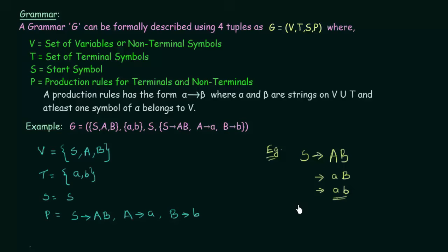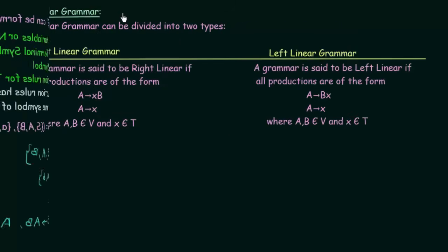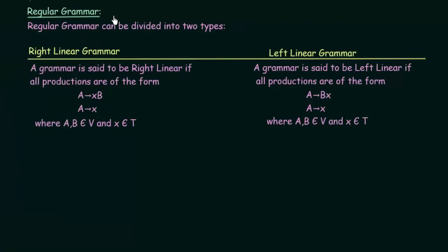Now let us come to regular grammar. Regular grammar is of two types: right linear grammar and left linear grammar. A grammar is said to be right linear if all productions are of the form A → XB or A → X, where A and B belong to V (the set of non-terminal symbols) and X belongs to T (the set of terminal symbols).